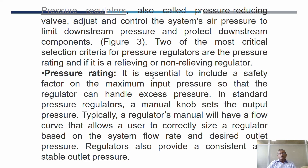That is what we call downstream pressure. If the pressure increases beyond the requirement, it may affect the component, so you have to set the pressure correctly. Two of the most critical selection criteria for pressure regulators are pressure rating and whether it is a relieving or non-relieving regulator. Pressure rating is essential to include a safety factor on the maximum input pressure so that the regulator can handle excess pressure. In standard pressure regulators, a manual knob sets the output pressure; regulators typically have a flow curve that allows the user to correctly size the regulator based on system flow rate and the desired outlet pressure. Regulators also provide a consistent and stable output pressure.